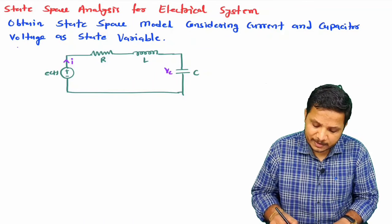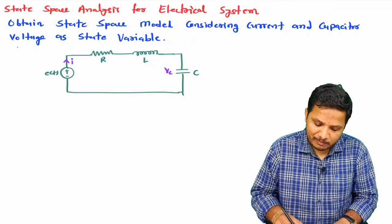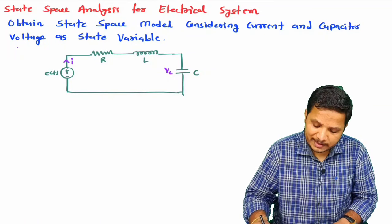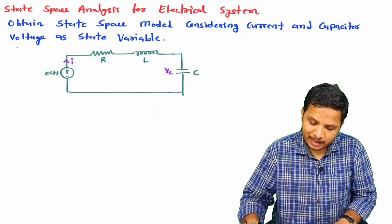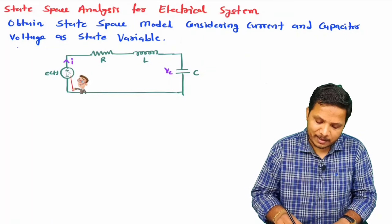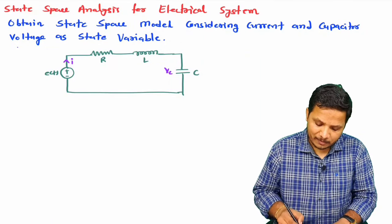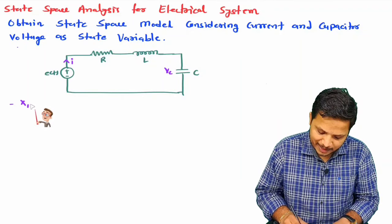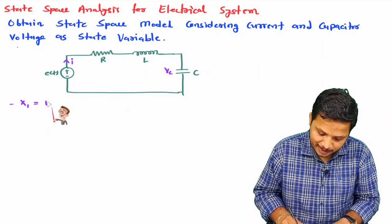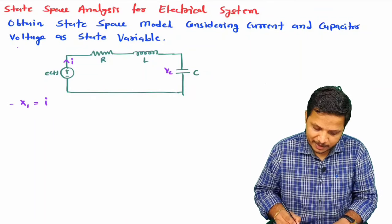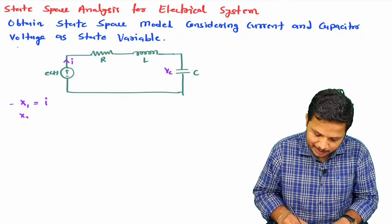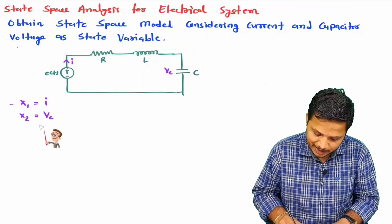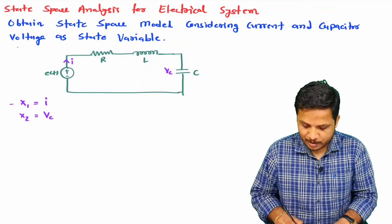So we will have to have two state variables to form a state space model. The state space model will have two state variables, and in the equation itself current and capacitor voltage are given as state variables. Let us define x1 as current I, and x2 as capacitor voltage Vc.